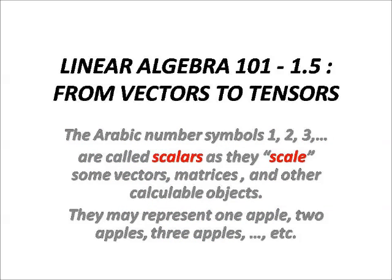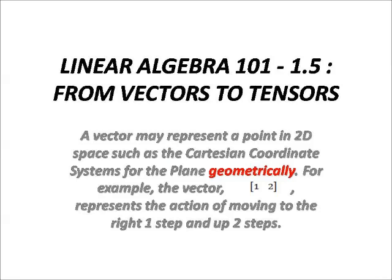The Arabic number symbols 1, 2, 3 are called scalars as they scale vectors, matrices, and other calculable objects. They may represent one apple, two apples, three apples, etc.